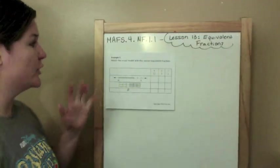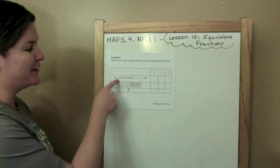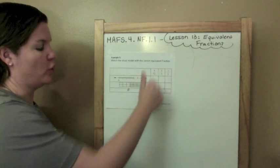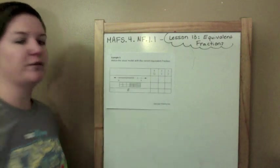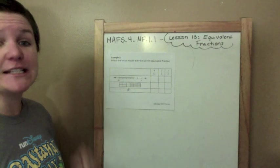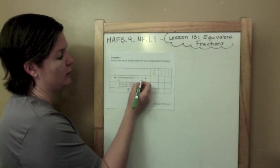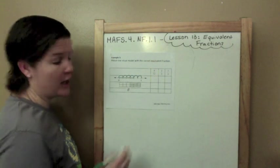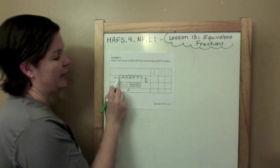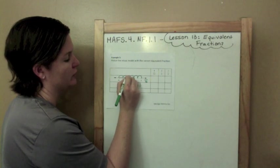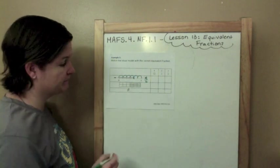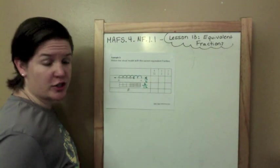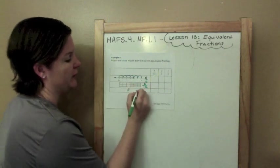Okay, match the visual model with the correct equivalent fraction. These are our visual models. We have a number line, we have an area model, and we have a circle, it's another kind of area model. And then over here we have 4 twelfths, 2 thirds, 1 half. Let's do this. So I need to see if they're equal, if they're equivalent. So what I'm going to do first is determine the fractions of these visual models. So between 0 and 1, let's figure out the fraction going on. So there's 1, 2, 3, 4, 5, 6 hops total. So my denominator is going to be 6. And I'm considering this shaded part right here. So 1, 2, 3, 4. 4 sixths for this fraction. Over here, let's figure out our denominator. We've got 6 here, plus 6 here, which would be 12. And 6 are shaded. And then on the circle fraction, we have 3 parts and only 1 is shaded.